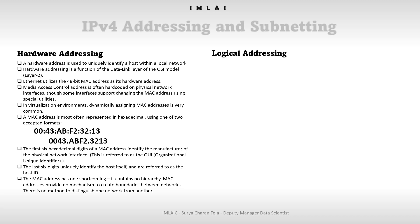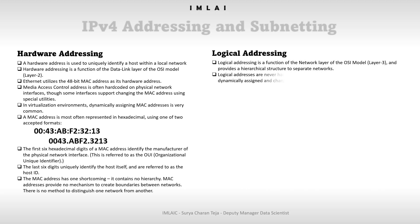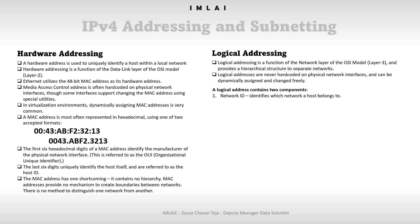The scalability limitations of layer 2 hardware addresses are mitigated using logical addresses. Logical addressing is a function of the network layer of the OSI model — that is layer 3 — and provides a hierarchical structure to separate networks. Logical addresses are never hard-coded on physical network interfaces and can be dynamically assigned and changed freely. A logical address contains two components: a network ID, which identifies which network a host belongs to, and a host ID, which uniquely identifies the host on that network.